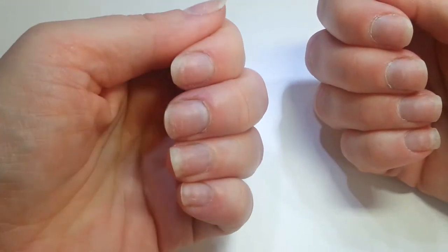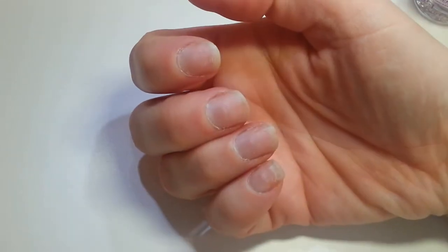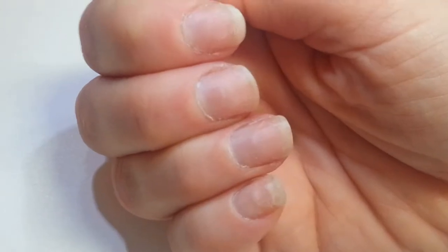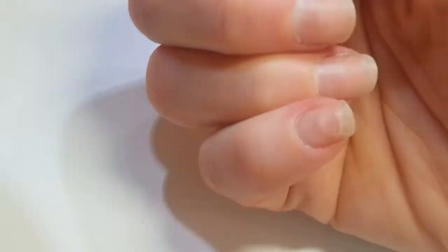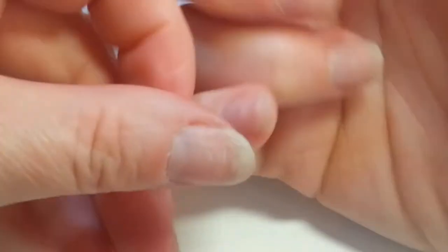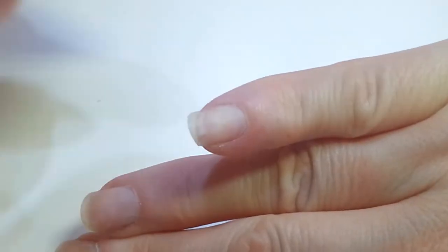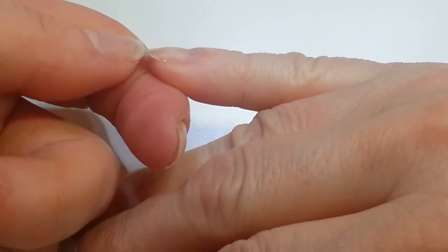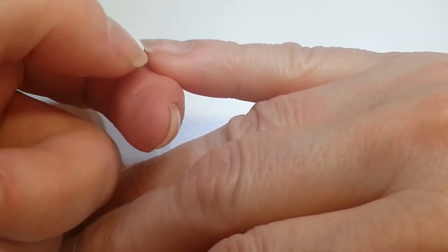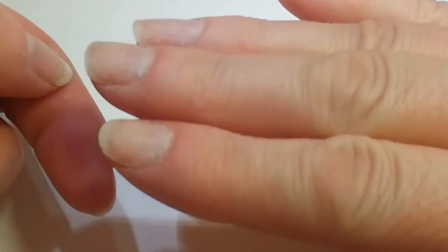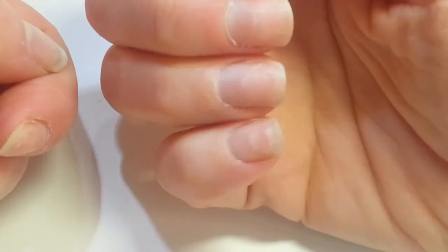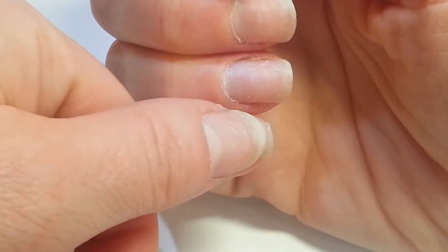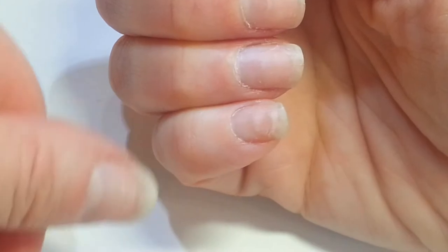I'll try to stay in focus and get a better close-up to see how they're going so far. This one here keeps snagging. I've had to file it a couple of times, but it's getting quite long. Like I say, they're still really soft, so I need to trim these thin edges off. You can see from the line when I had some acrylics on, something there.